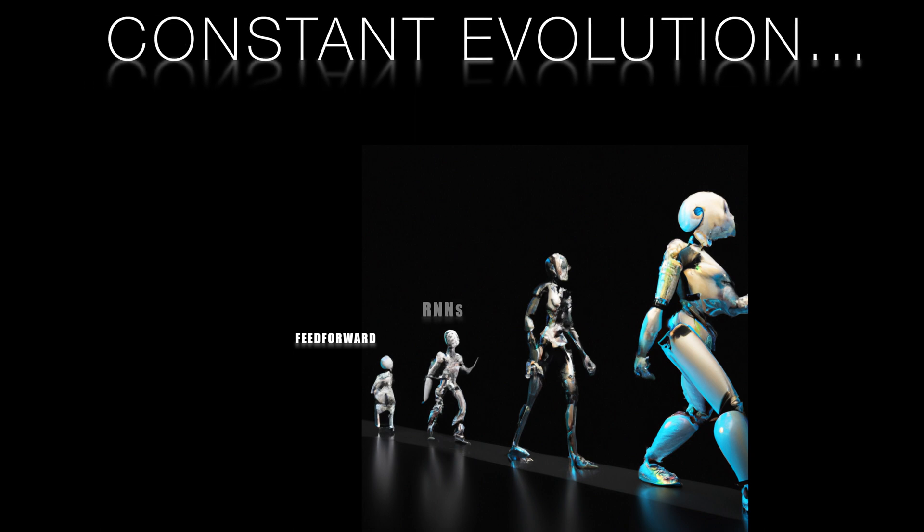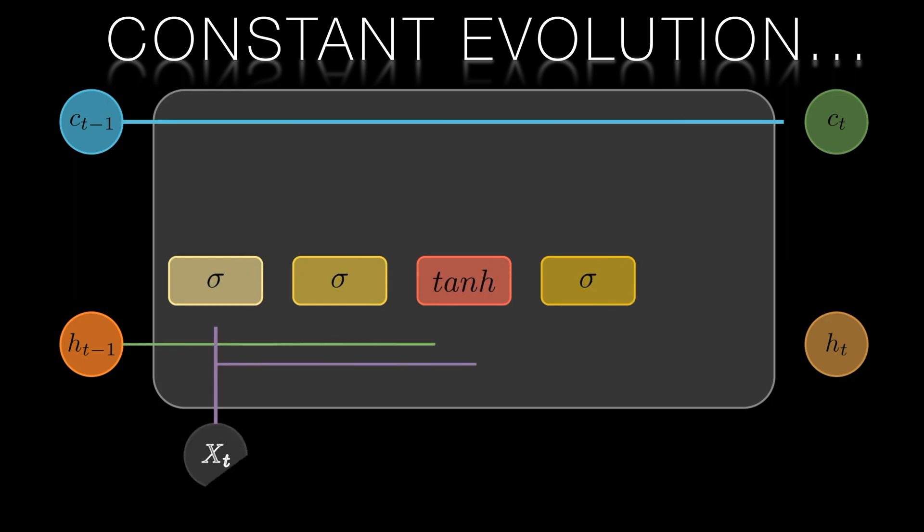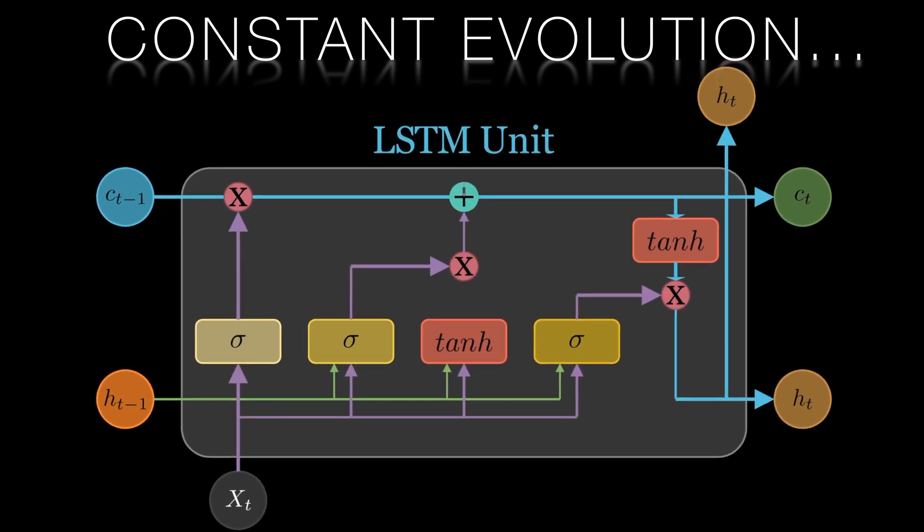In conclusion, the evolution of neural networks from Elman models to LSTMs represents a significant leap forward in our ability to model and process sequential data. By addressing the shortcomings of Elman networks, LSTMs have found success in numerous real-world applications from language modeling to time series forecasting.